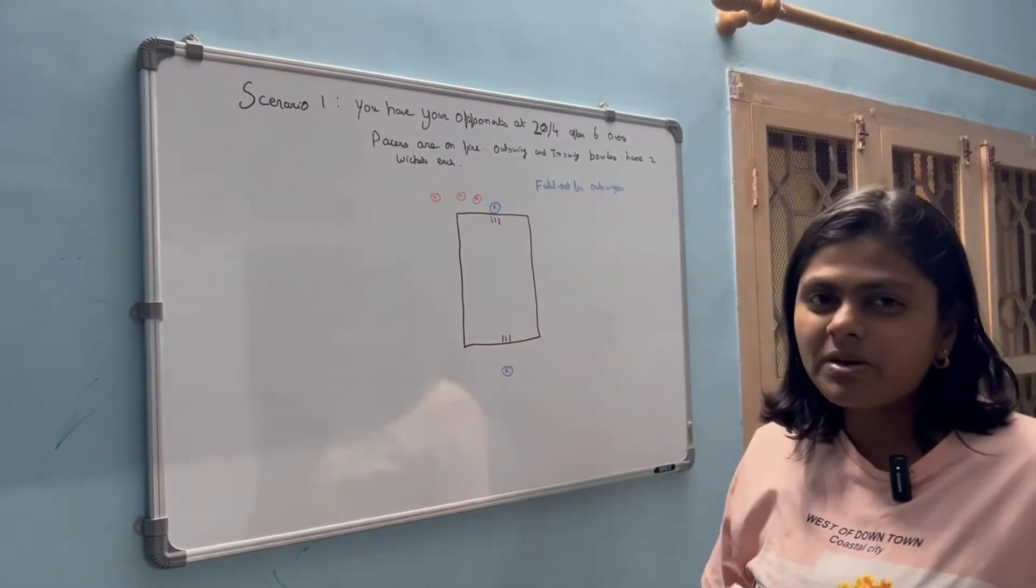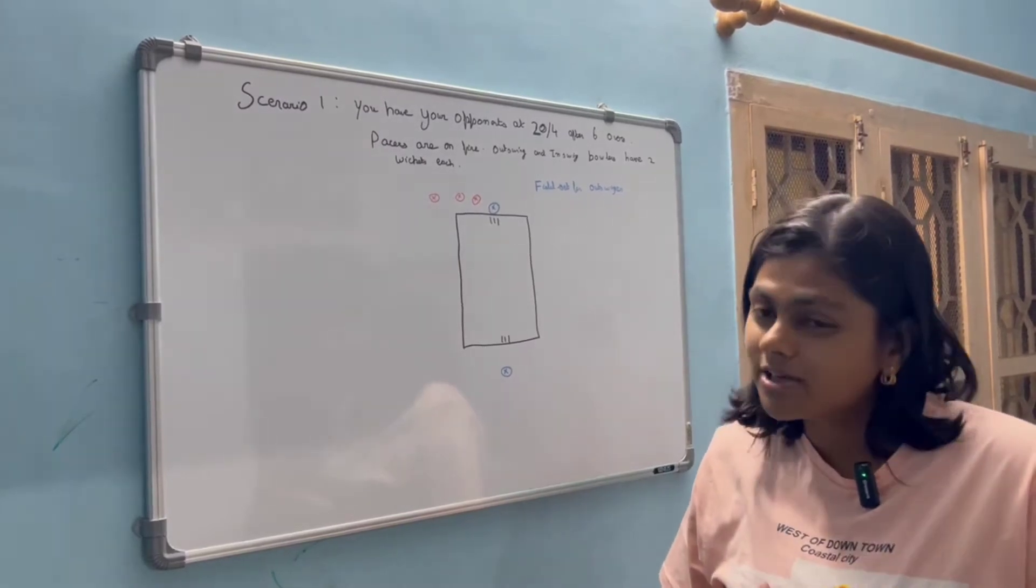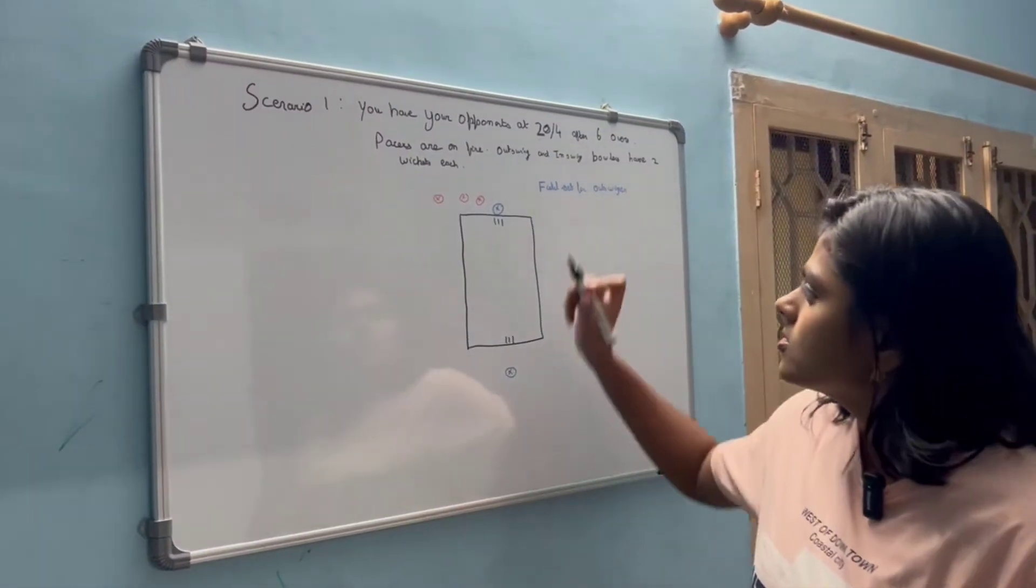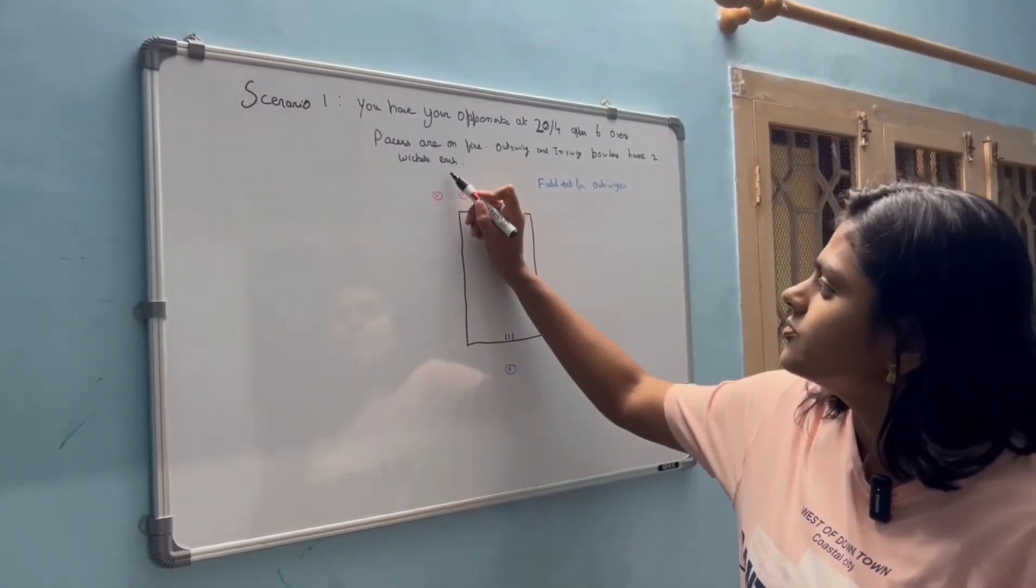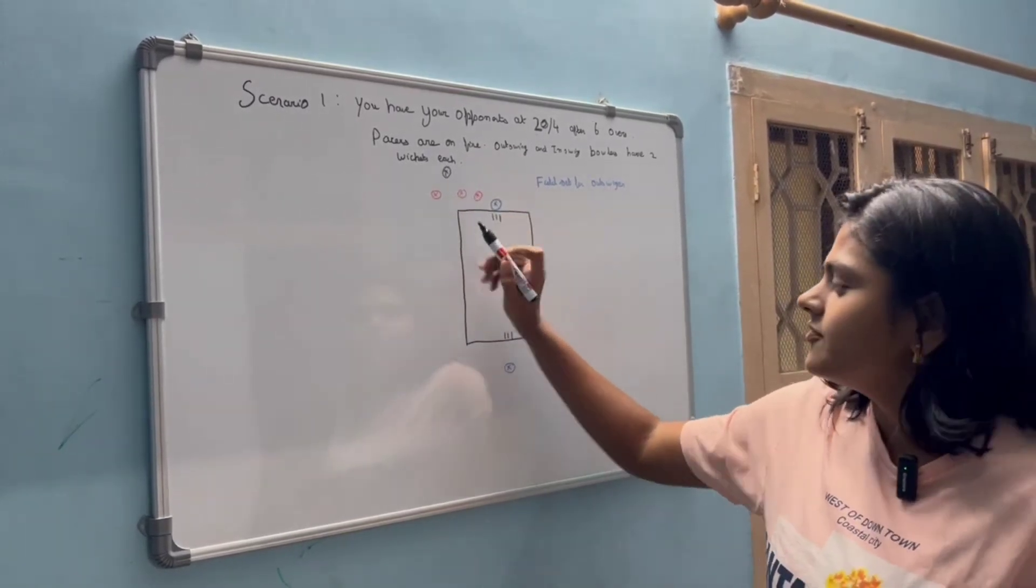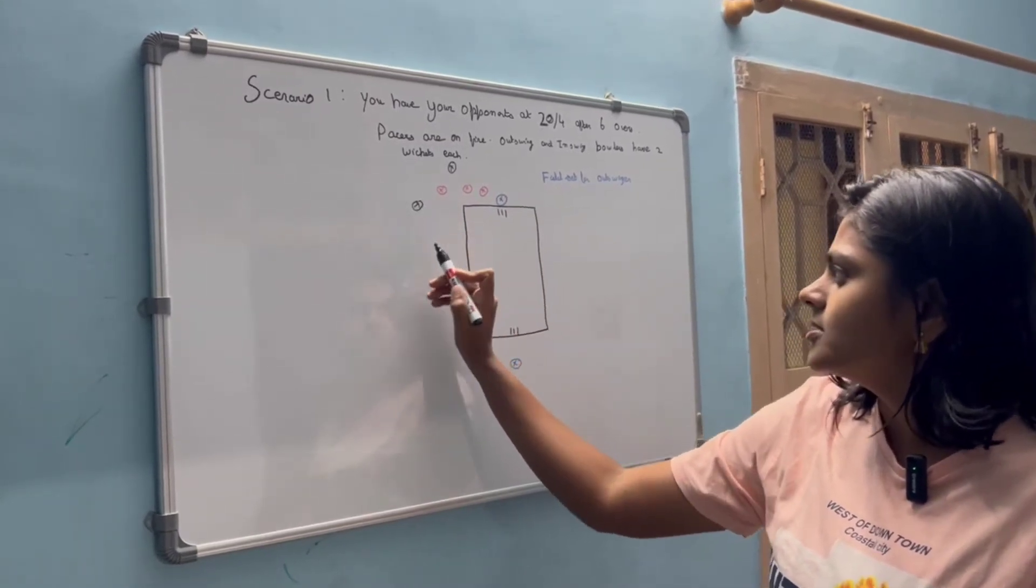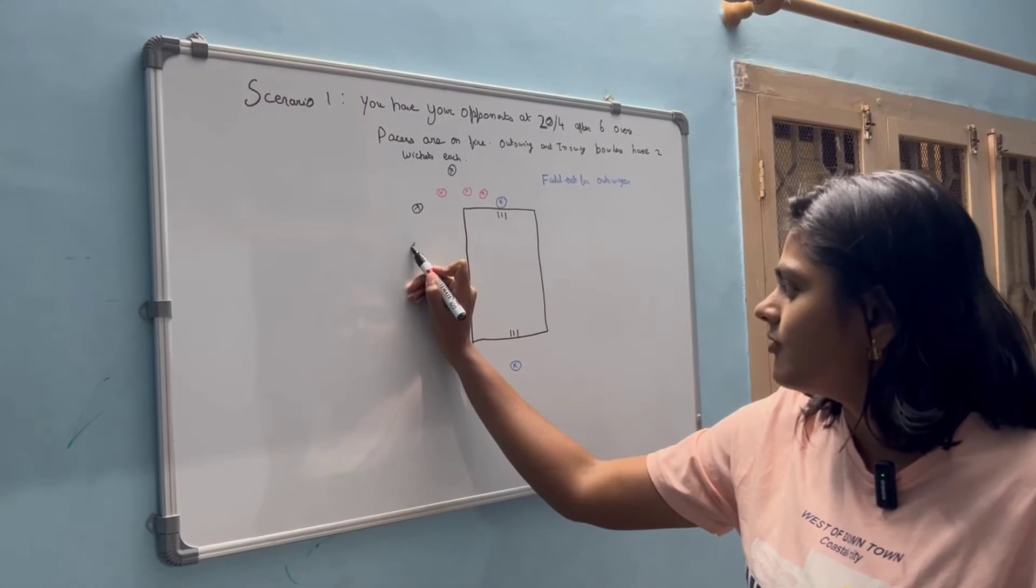So these will be my catching positions. So now moving on to the other positions. I will have a third man at the boundary region between the second slip and the gully fielder, a point a little bit backward, a cover fielder.